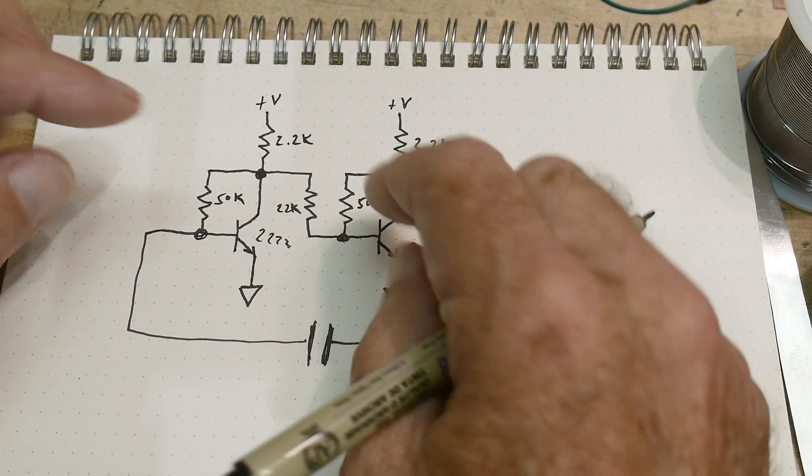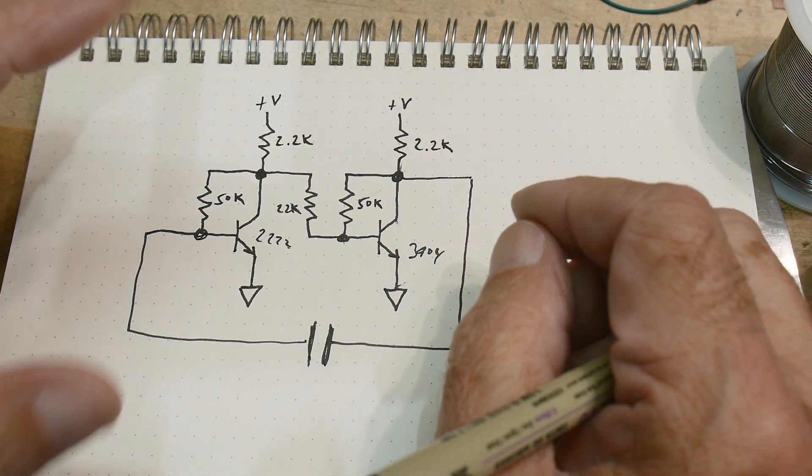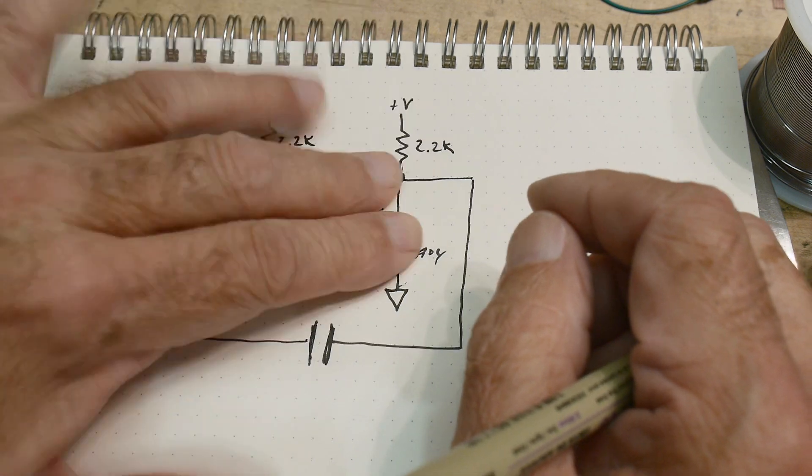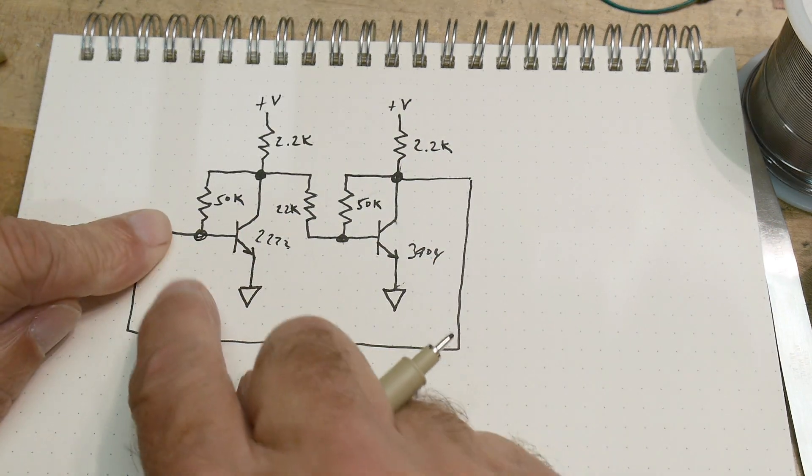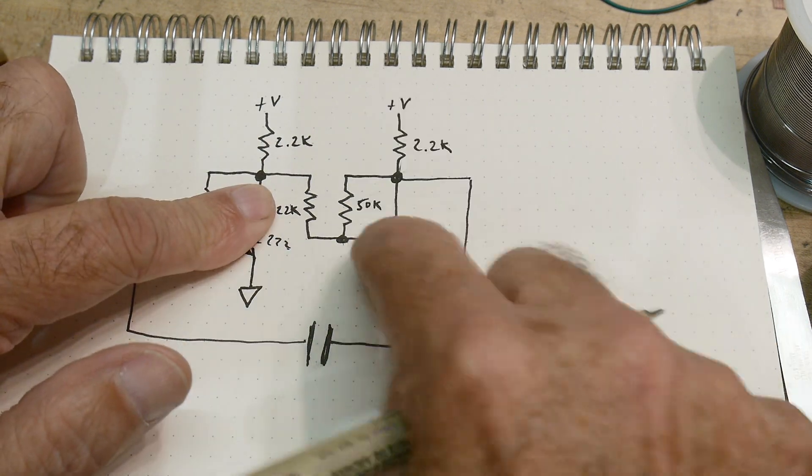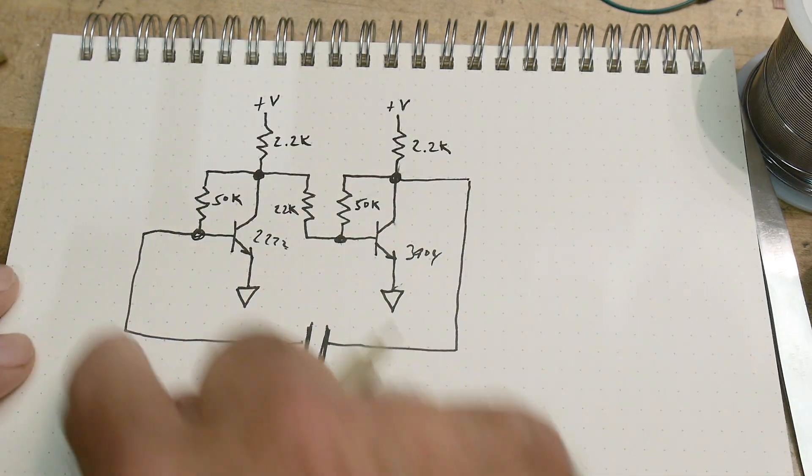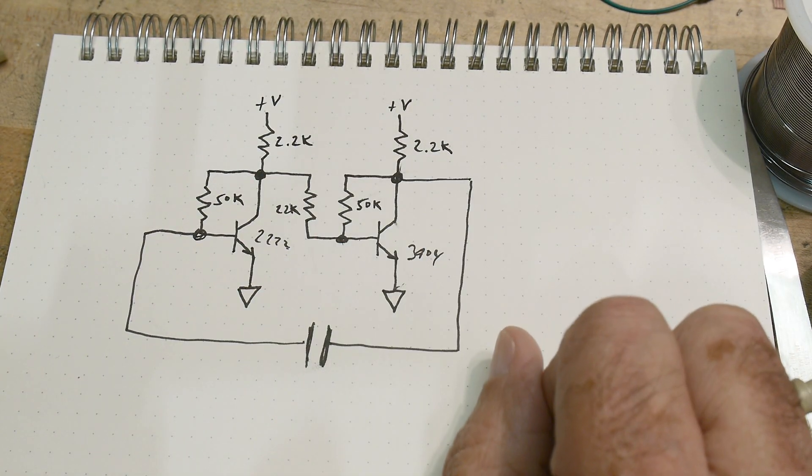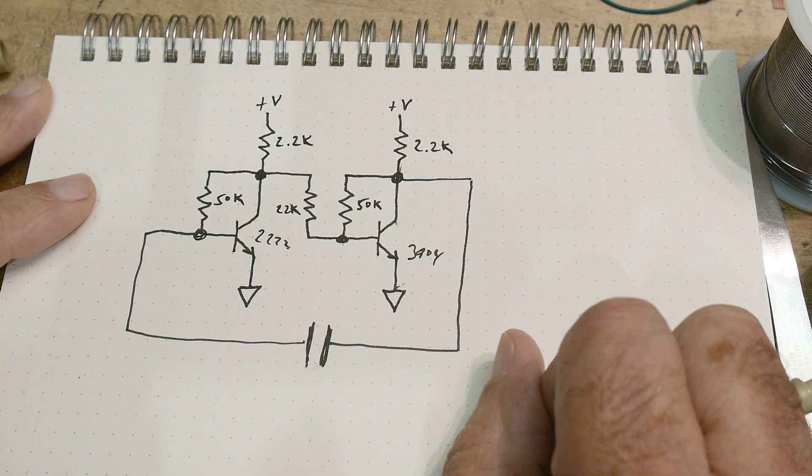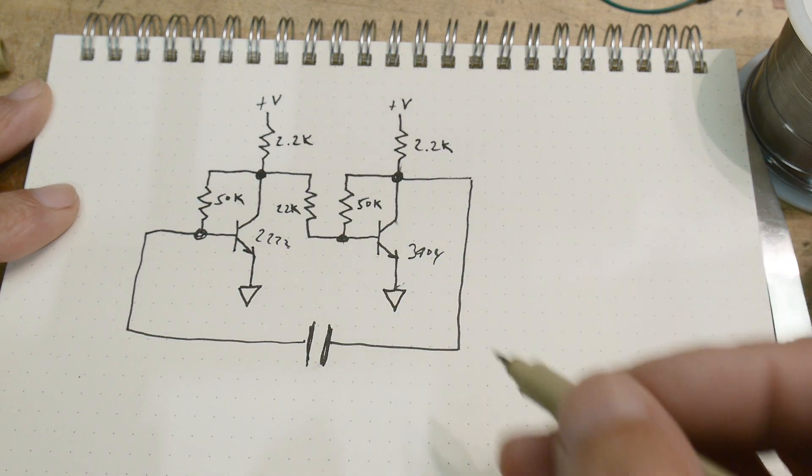So when this thing goes, this thing turns on, that means this one turns off. You get a negative pulse. That negative pulse runs around here, turns this guy off, turns this guy on. You get a negative pulse again. And it goes round and round and round.